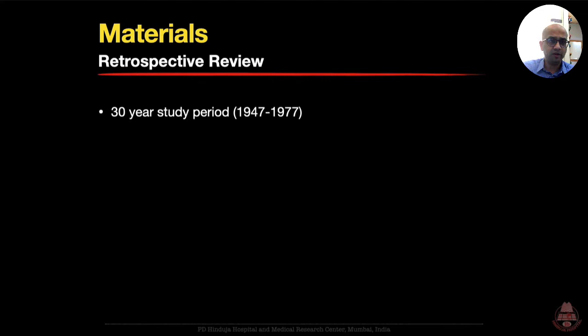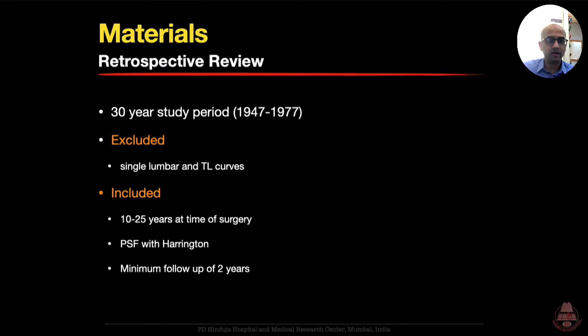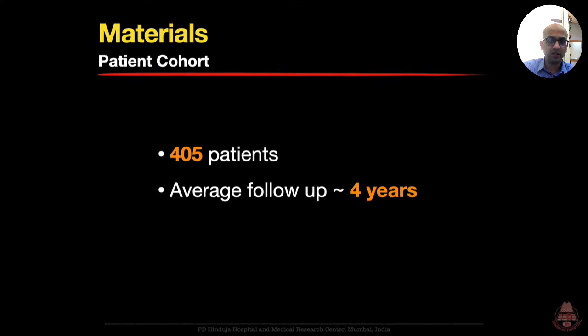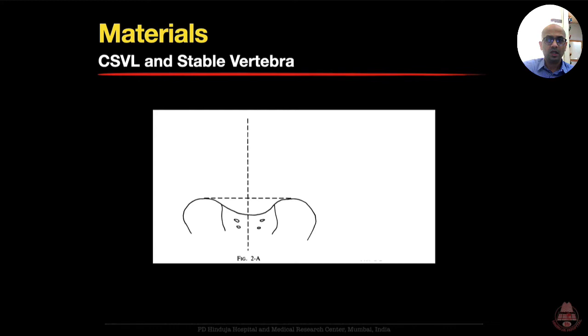The material and methods: this was a retrospective review of a 30-year study period which excluded single lumbar and thoracolumbar curves but included all adolescent curves. The age group was 10 to 25 years at the time of surgery. All were treated with a posterior spinal fusion with Harrington instrumentation and the minimum follow-up was two years. They had 405 patients in the cohort with an average follow-up of four years.